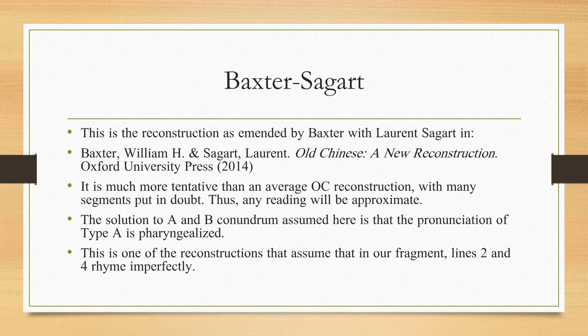The second reconstruction we consider is a development of the first, as reported in Old Chinese: A New Reconstruction by William Baxter and Laurent Sagart. It is much more tentative than a typical reconstruction of Old Chinese and contains lots of segments which may or may not occur, put in parentheses, and also segments that must be there but whose exact identity is unsure, put in square brackets. The solution in this version to the A and B type problem is to consider that type A contains pharyngealized syllables and type B are ordinary or non-marked ones. This is one of the three reconstructions that assumes that the second and fourth lines do not rhyme exactly.